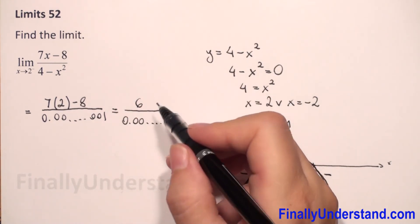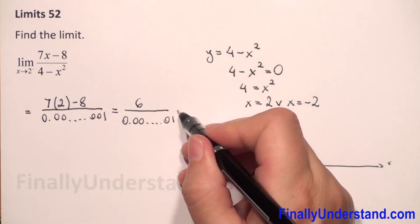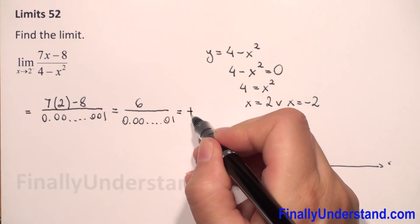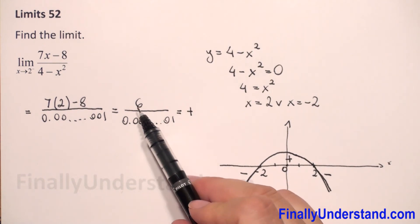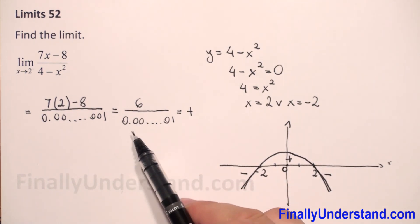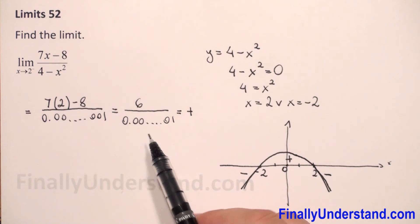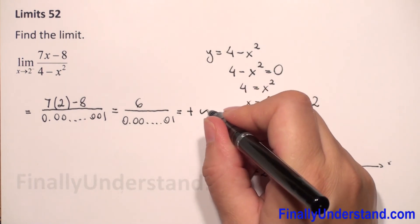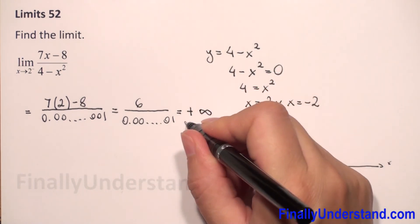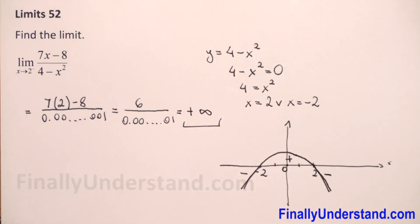We have a positive constant divided by a positive very small number close to zero, which gives a very large positive number. Therefore, the answer is positive infinity.